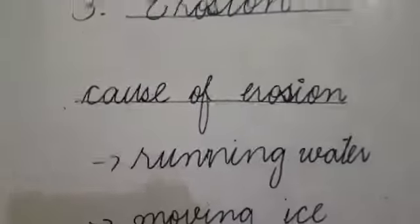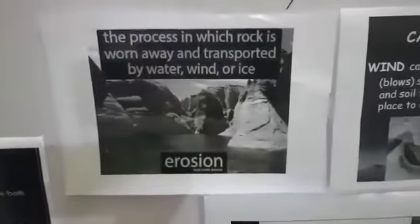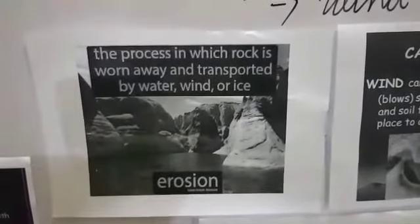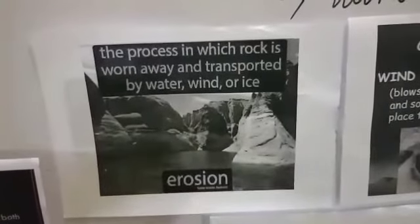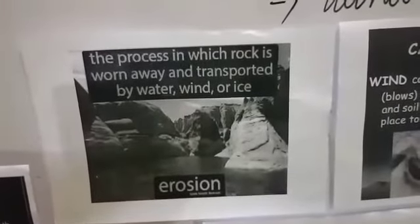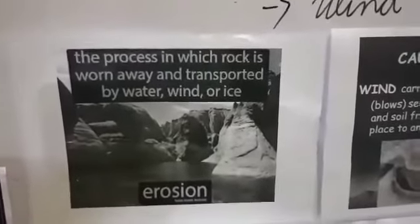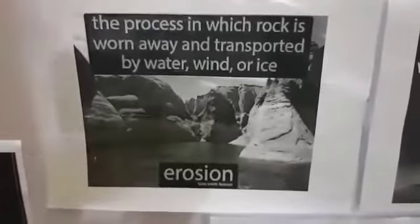Next one is erosion. What is erosion? It is the process in which rock is worn away and transported by water, wind or ice. The process of removal or wiping away of rock fragment is called the erosion. Erosion is happened due to the Mass Wasting and Weathering.